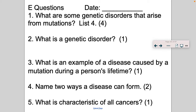Another question asks for an example of a disease caused by a mutation during a person's lifetime — meaning they're not born with it, it arises. You can also find two ways a disease can form in the previous lecture notes under mutations. And today's question asks: what is characteristic of all cancers? Please look at today's notes for that. Get those questions in — okay, bye!